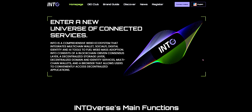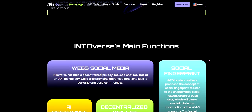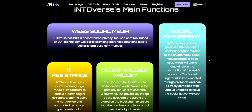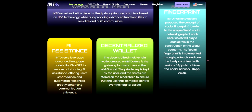Intoverse consists of a blockchain-driven consensus layer, decentralized storage layer, decentralized domain and identity services, multi-chain wallets, and a browser that allows users to conveniently access decentralized applications. For Web3 social media, Intoverse has built a decentralized privacy-focused chat tool based on UDP technology, while also providing advanced functionalities to socialize and build communities. For the AI assistant, Intoverse leverages advanced language models like ChatGPT to enable outstanding AI assistants, offering users smart advising and more tailored responses, greatly enhancing communication efficiency.